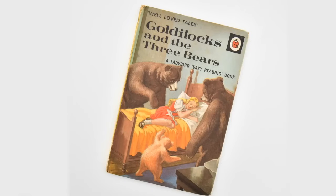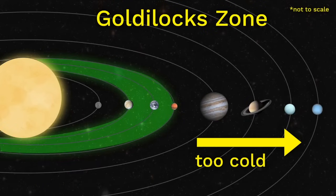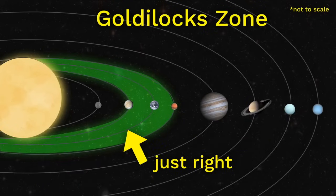Goldilocks goes into the bear's house and tries different things that belong to the bears, like the three bowls of porridge. One is too hot, one is too cold, and one is just right. Earth is in the just right part of the solar system.